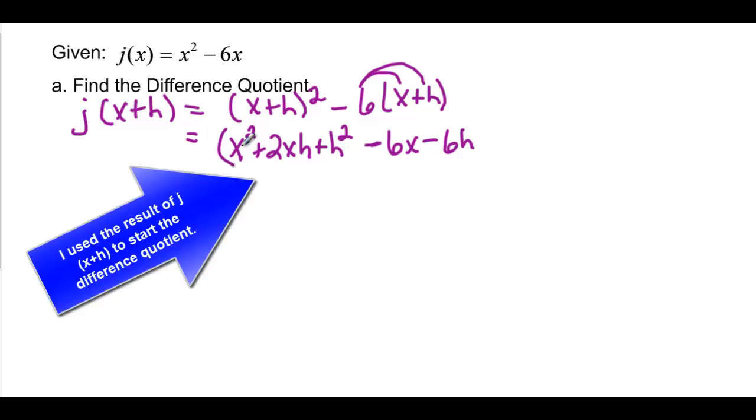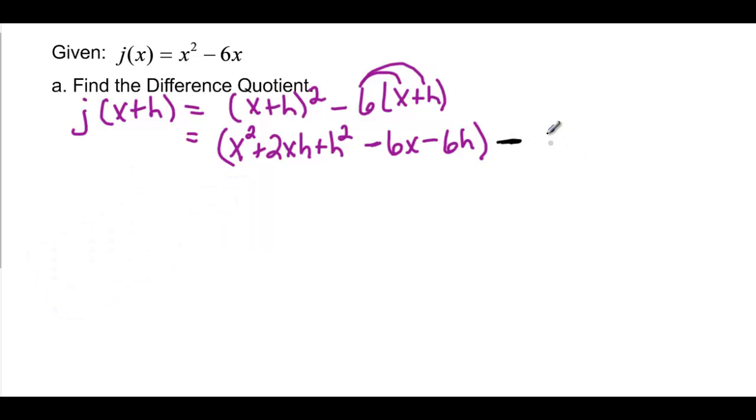So that's what this is. I'm going to put parentheses around that, and just go ahead and work right here with that. So I have to subtract my original function, x squared minus 6x, and all of that is over h.